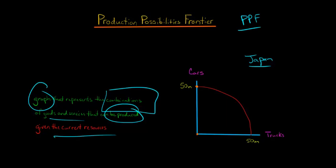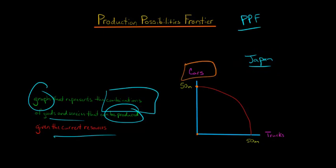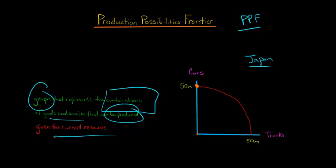Basically, this is saying if Japan focused simply on producing cars and completely said forget about trucks, Japan would be able to produce 50 million cars. You might ask why can't they produce 60 or 70 million? Because Japan is limited given its current level of resources — only so much steel, so much rubber. Resources are limited, so there's only so many resources.